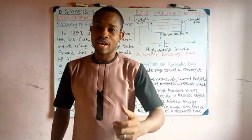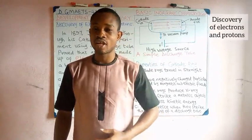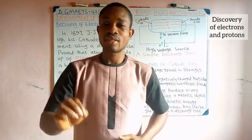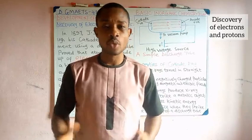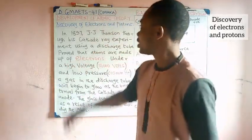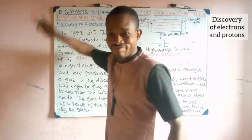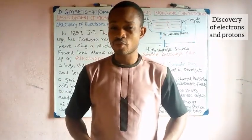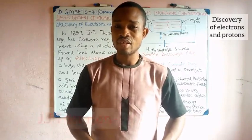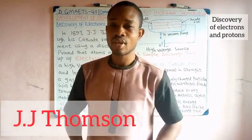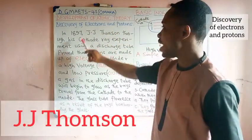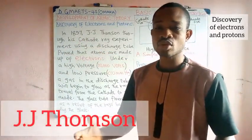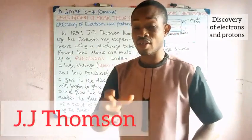In this video, we want to look at the discovery of electrons and protons, and find out the scientists that discovered them and how they went about it. The scientist who discovered electrons and protons is J.J. Thomson. In 1897, J.J. Thomson carried out his cathode ray experiment using a discharge tube.